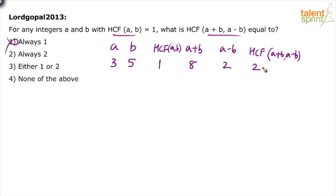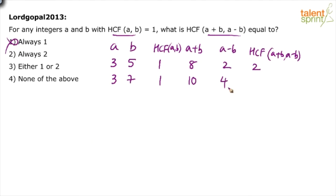The highest common factor between 8 and 2 is 2. Let's try something else — take a=3 and b=7. HCF of 3 and 7 is 1. Then a+b = 10 and a-b = 4, and the highest common factor is 2 again.